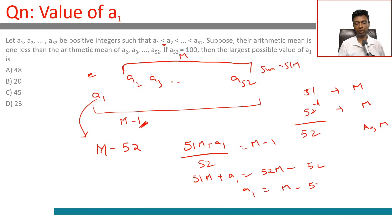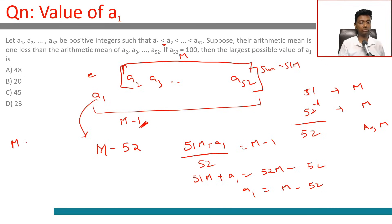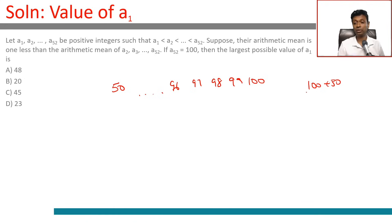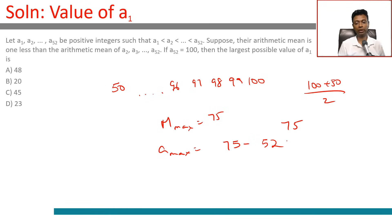Therefore a1 = m − 52. To maximize a1, we need to maximize m, the mean of the 51 distinct integers a2 through a52. Since all numbers are distinct and the largest is 100, the maximum set is {50, 51, 52, ..., 100} — 51 numbers. Their average is (100 + 50) / 2 = 75. So m_max = 75, and a1_max = 75 − 52 = 23.